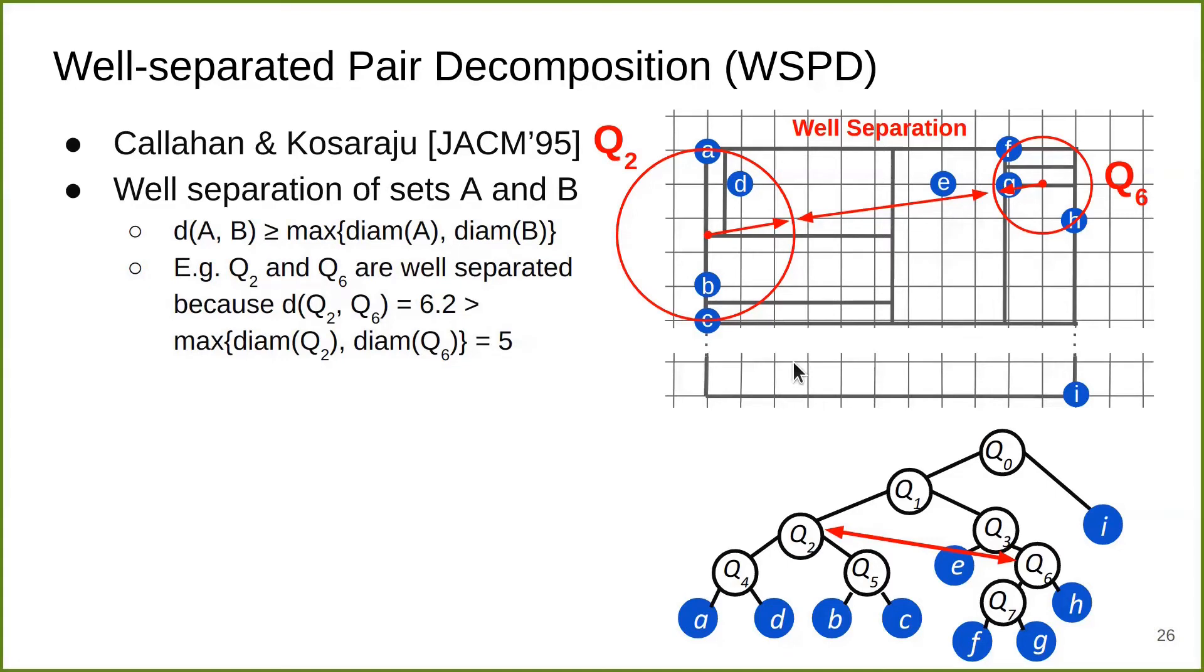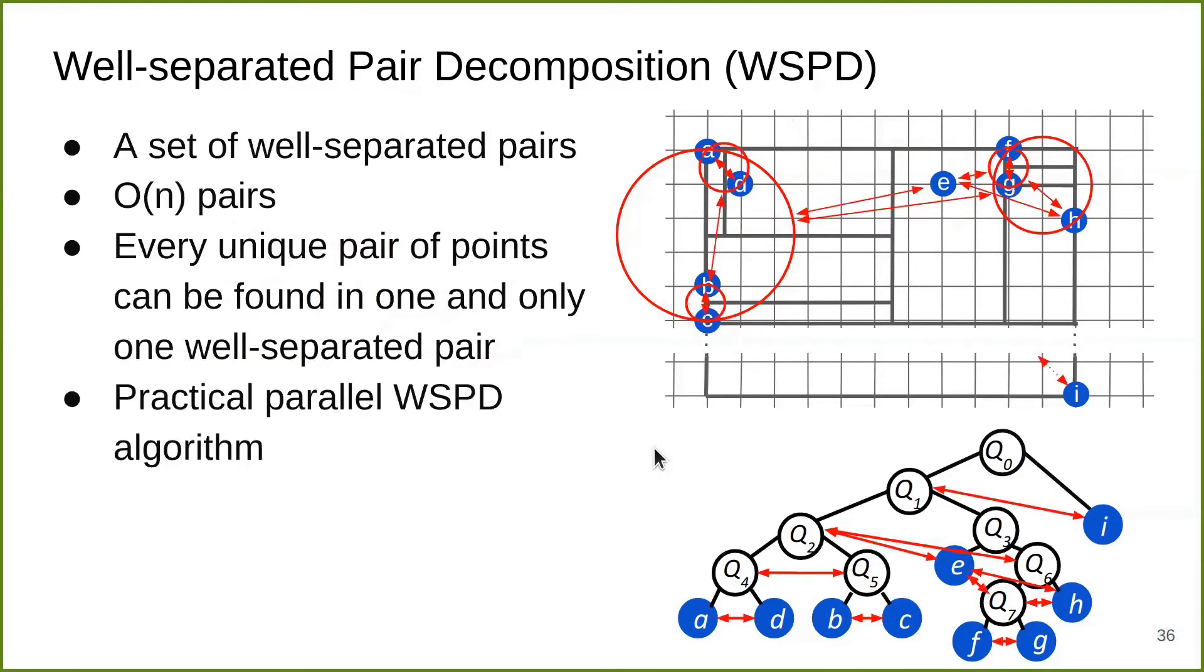A well-separated pair decomposition is a collection of such pairs in the fair split tree that we construct. This is a visualization of the WSPD of the dataset. It has a number of good properties. There are only a linear number of such pairs and every unique pair of input points can be found in one and only one well-separated pair. In our paper, we propose a parallel and practical WSPD algorithm, but due to time limitations, I'm not going to explain here.